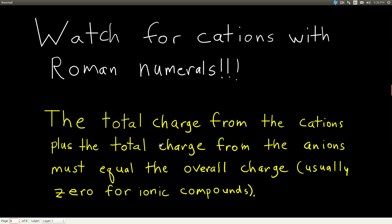The total charge from the cations plus the total charge from the anions must equal the overall charge. Looking ahead, we're going to see some compounds where the overall charge isn't zero — compounds that actually carry a charge — and we'll come back and use this rule then. But for now, all the ionic compounds we see will have zero overall charge, so the positive charges from the cations must equal the negative charges from the anions.